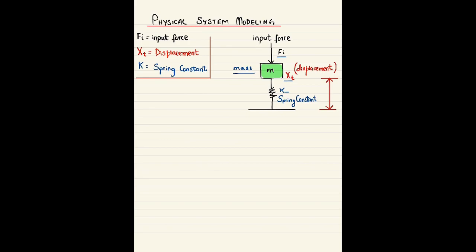To draw a free body diagram, we draw a block of mass exactly as given in the diagram and draw the input force in whatever direction is provided. The second thing is the force which will apply below the mass block as a reaction of the spring. When we apply the input force downward, the spring will push the mass upward — this force is called fk, acting upward — and the displacement at this point is represented as xt.